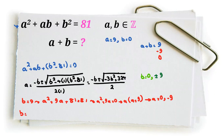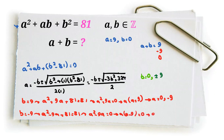If b equals negative 9, then a squared minus 9a plus 81 equals 81. Subtracting 81 from both sides: a squared minus 9a equals 0, so a(a minus 9) equals 0. Thus a equals 0 or a equals 9. If a equals 0, a plus b equals negative 9; if a equals 9, a plus b equals 0. So we have found all cases, and the possible values for a plus b are negative 9, 0, and 9.